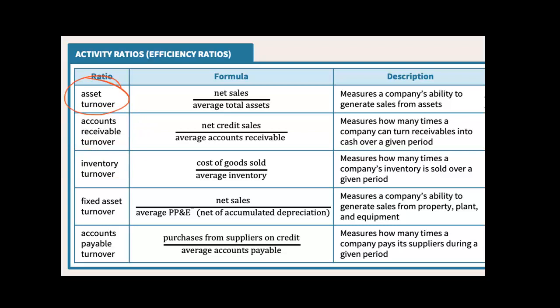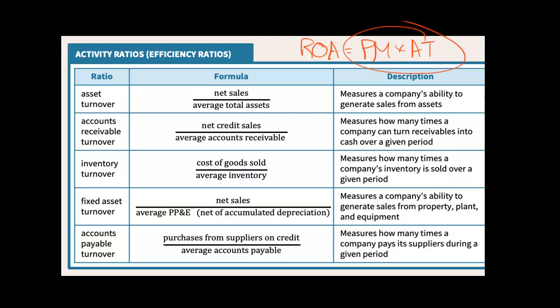Asset turnover is actually a component of ROA. We can decompose return on assets into profit margin and asset turnover. So asset turnover, or sales efficiency, times the company's profit margin — which is its ability to manage costs and expenses and keep them low — gives us the company's return on assets.